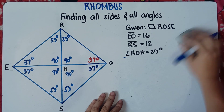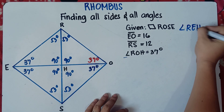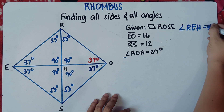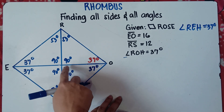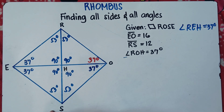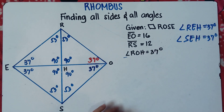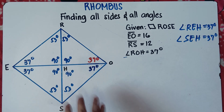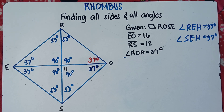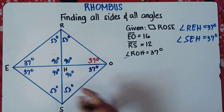You can write the angles as angle REH equals 37 degrees, and angle SEH also equals 37 degrees. We're done finding all angles. Now let's find all sides. We have line segment EO equals 16. Therefore, OH is 8 and EH is also 8, because 8 plus 8 equals 16.